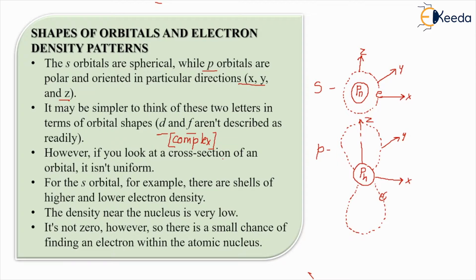However, if you look at the cross-section area of an orbital, it isn't uniform - you will not find uniformity in it. But for the S orbital, for example, there are shells of higher and lower electron density. Very important - electron density. Now what do we mean by electron density? It is the number of electrons at that particular spot or at that particular space. That particular thing is known as electron density.